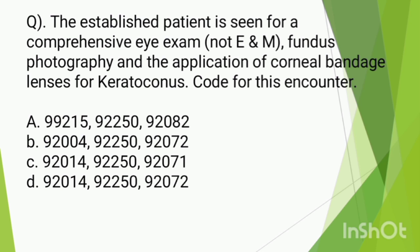Option B primary code is 92002, which is a new patient code. Since the question states the patient is established, we eliminate option B. Option C primary code is 92014. The code description for 92014 is ophthalmological service, comprehensive, established patient. So we select option C.